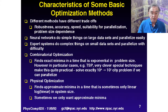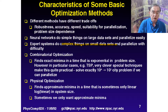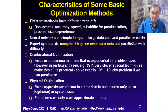All of these methods have different trade-offs. Nature has designed so many methods because different methods are better at different problems. Expert systems do complex things on small data sets, arguing about overall issues. Neural nets do simpler things, lighting up neurons on large data sets, and are actually parallelized very easily.